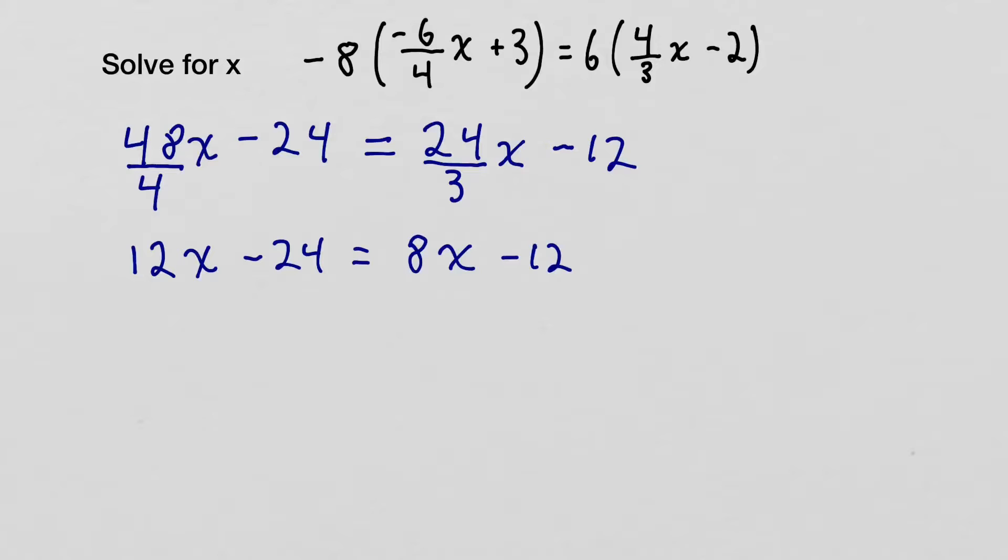The next thing that I want to do is move some of these numbers around so that I have like terms on the same side. So I'm going to take this 8x, and I'm going to move it over to this side. And I'm going to take this 24, this negative 24, and move it over to the other side. Now, in order to do that, I'm going to subtract 8x from both sides.